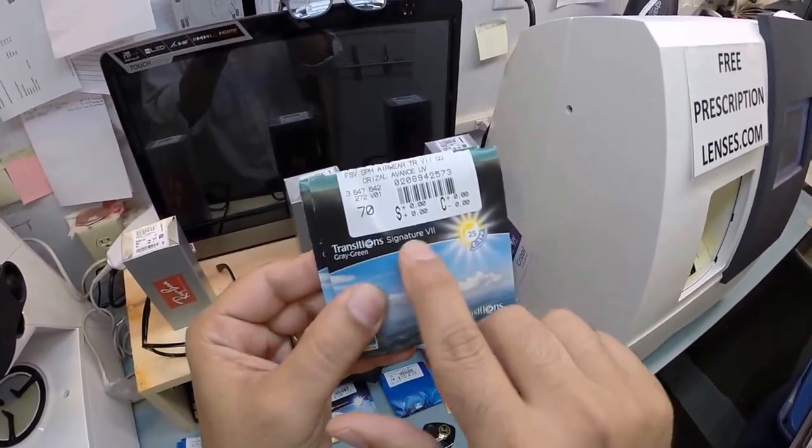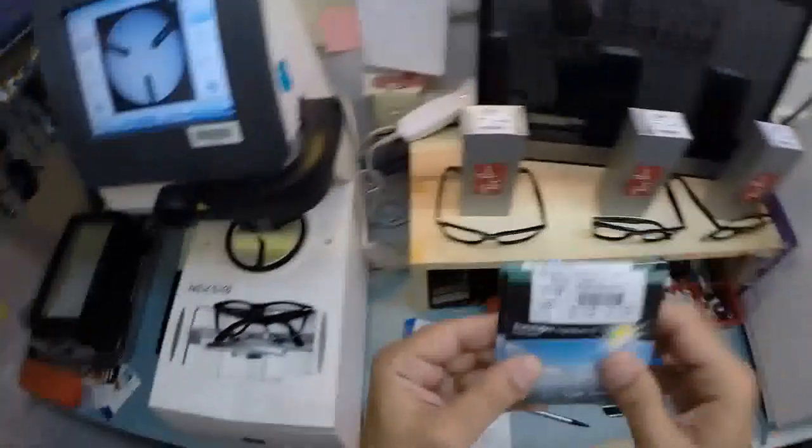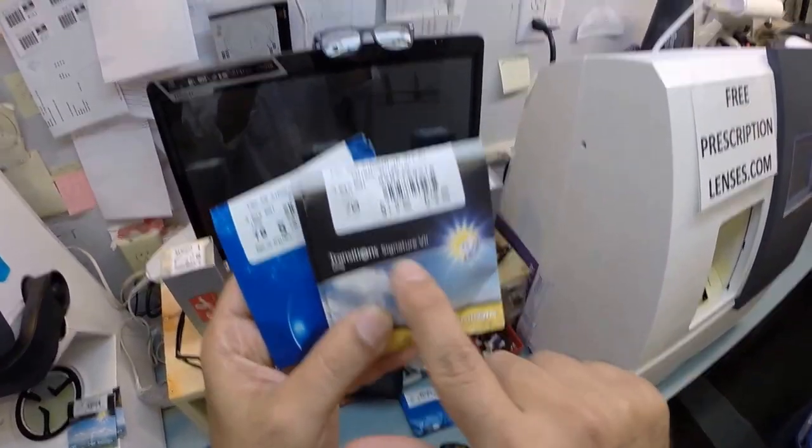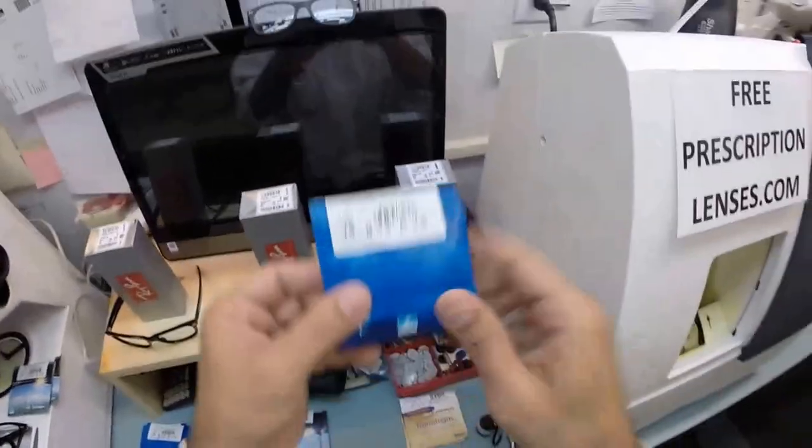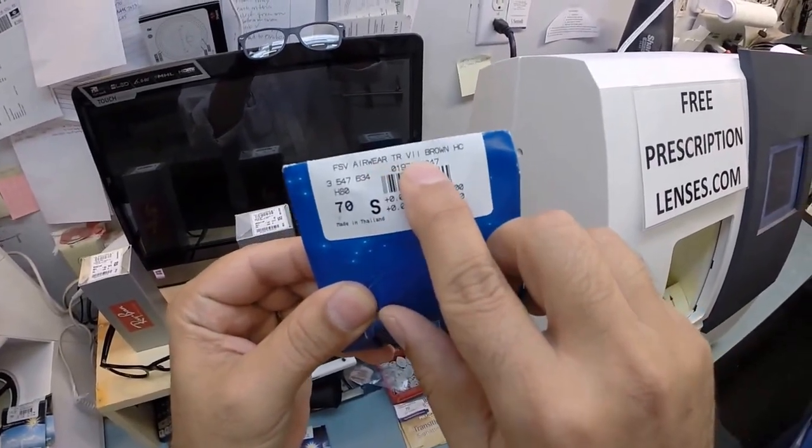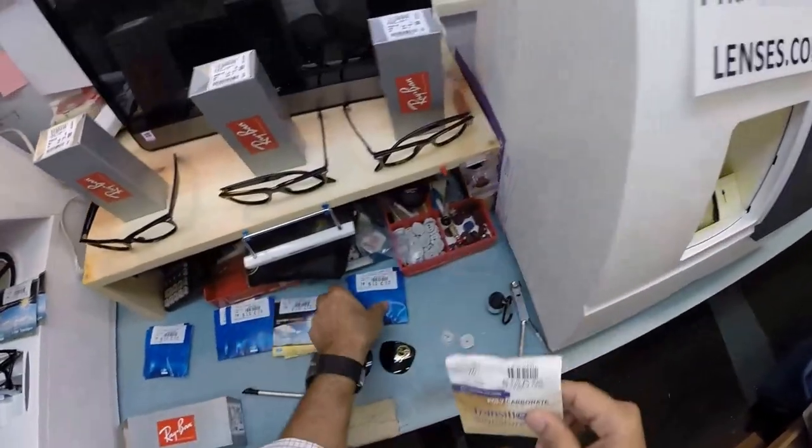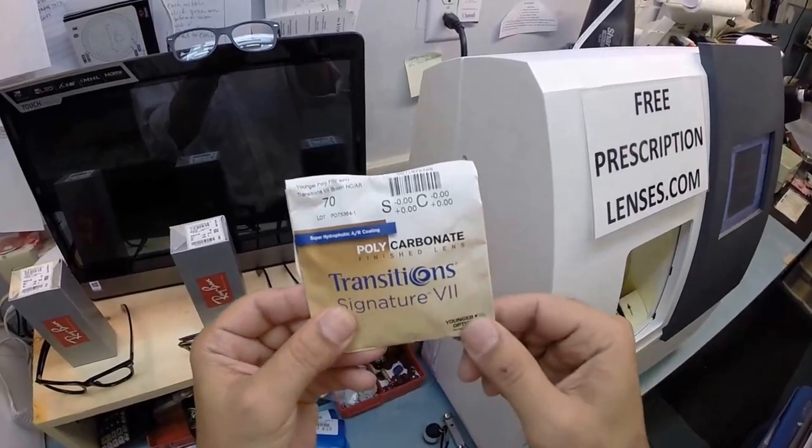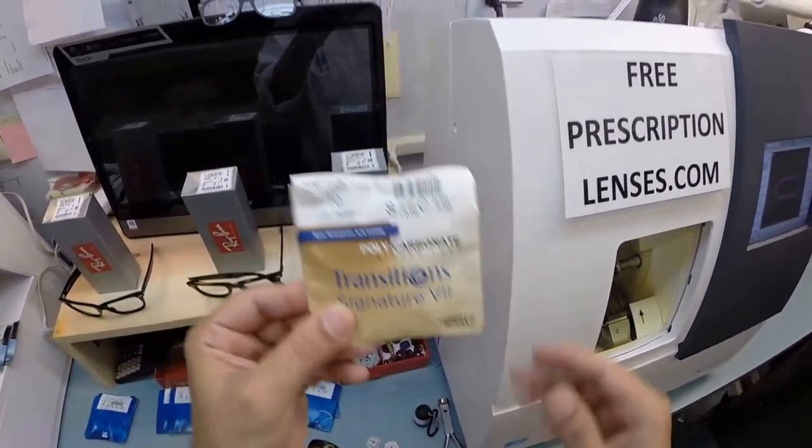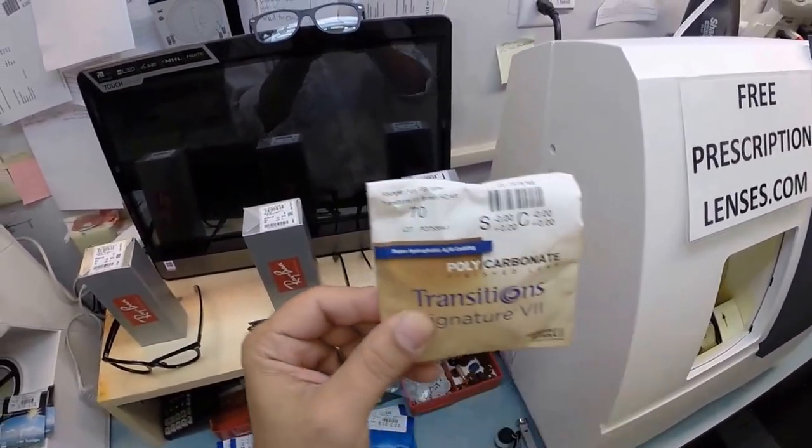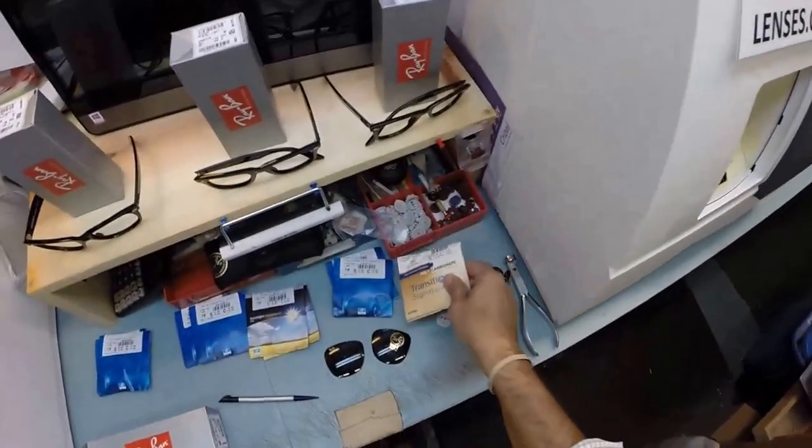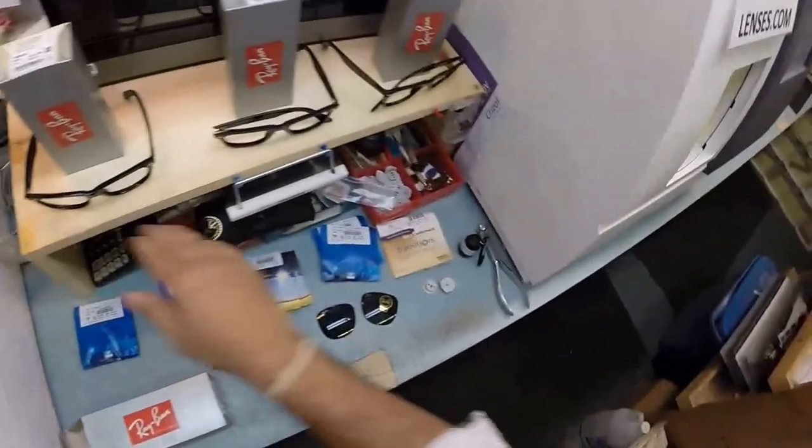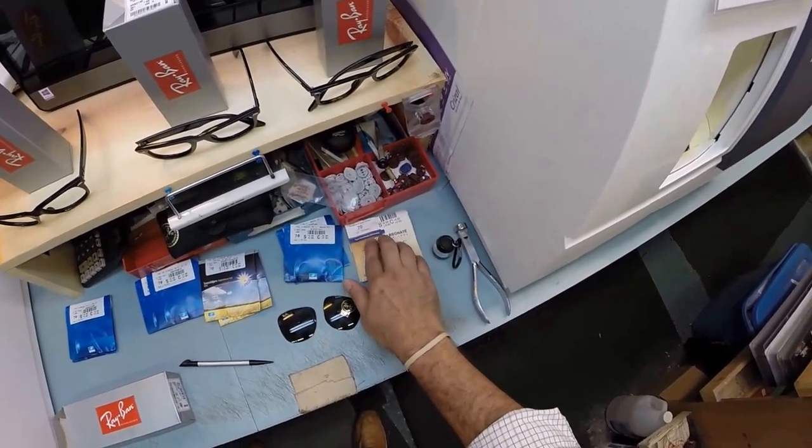I also have the polycarbonate Transition 7 gray lenses, Transition Signature 7 gray with Crizal Alize. I have the Essilor brand polycarbonate AirWear Transition 7 brown lenses. Somehow Essilor did not get their bid in to make every single lens, so the Transition Signature 7 brown lenses with anti-glare coating, Younger Optics was able to bid on the contract and get that. This is the only lens that Essilor does not do. This is by Younger, which is another premium lens manufacturer. Again, we have transitions gray, transitions gray with Crizal Alize, transitions green, transitions green with Crizal Avance, transitions brown, transitions brown with the Younger anti-glare coating, super hydrophobic.